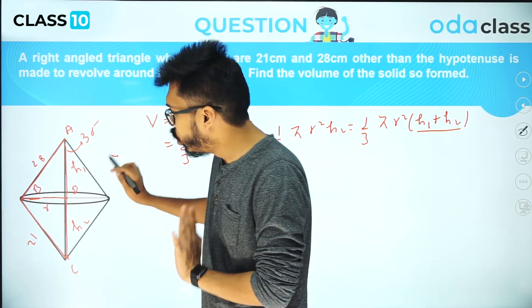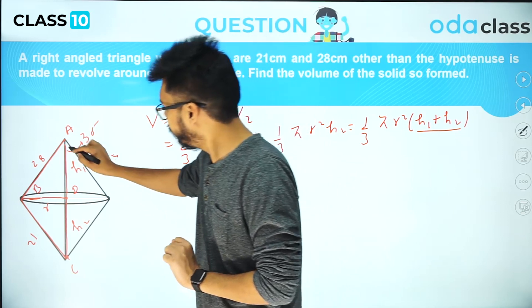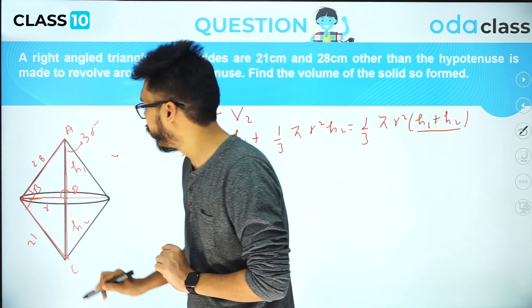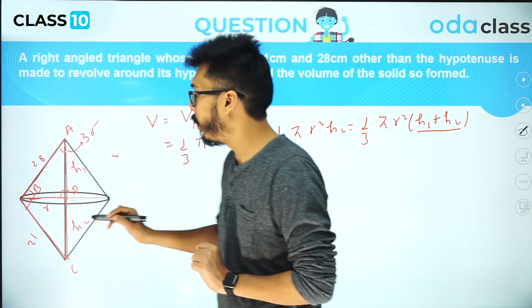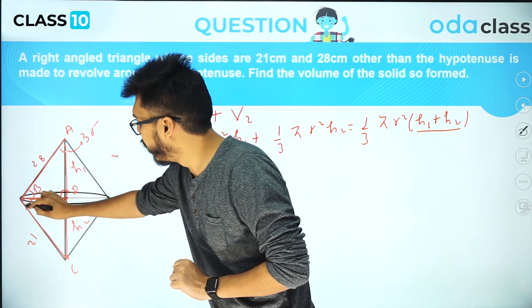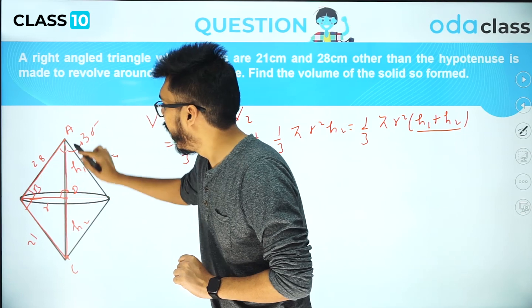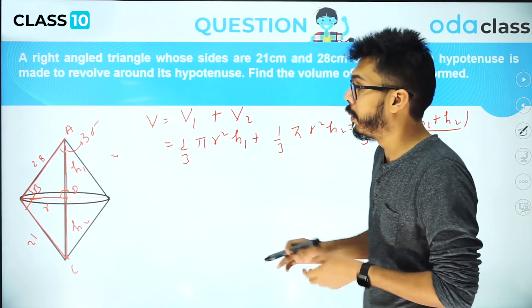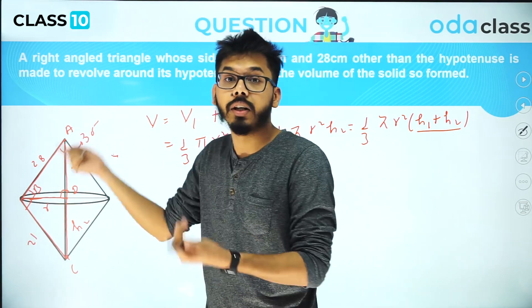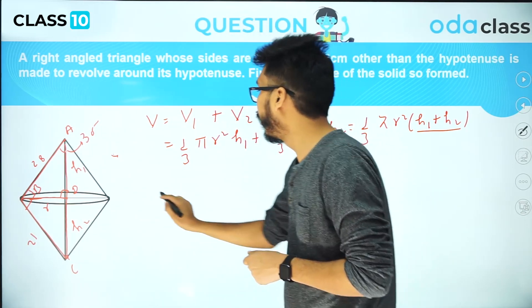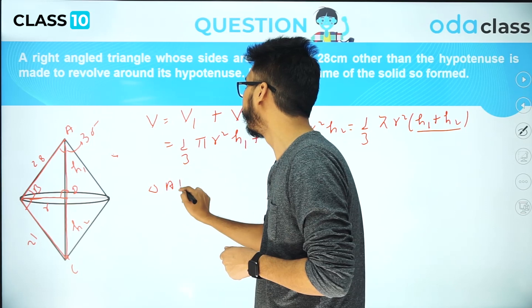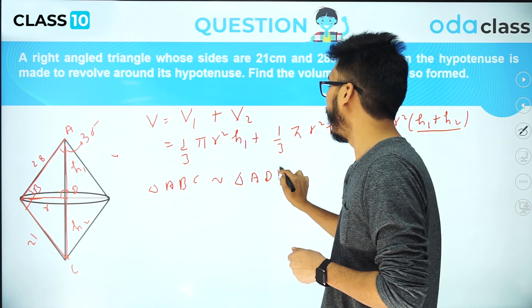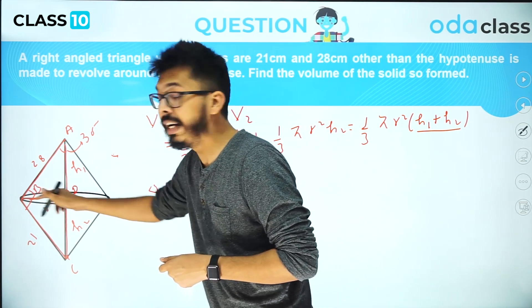Notice that two triangles are actually similar. This angle is 90° and this angle is also 90°, and this angle is common. If I talk about the bigger triangle ABC and the smaller triangle ADB, they are similar because one angle is common and the other angle is 90 degrees. I can write triangle ABC is similar to triangle ADB.